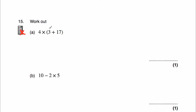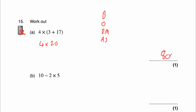Question 15a: work out 4 multiplied by (3 plus 17). Brackets first: 3 plus 17 is 20. Then 4 times 20 is 80. Our answer is 80.